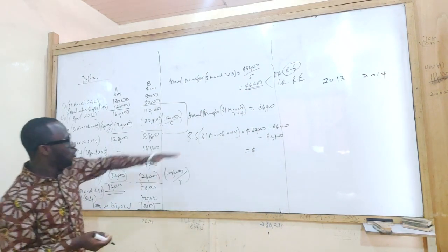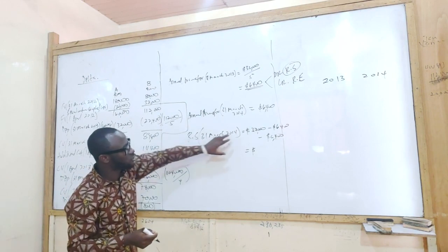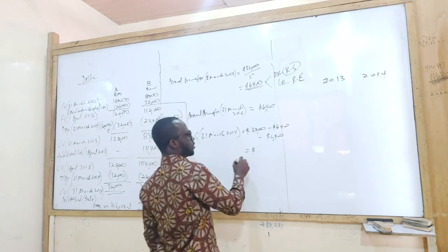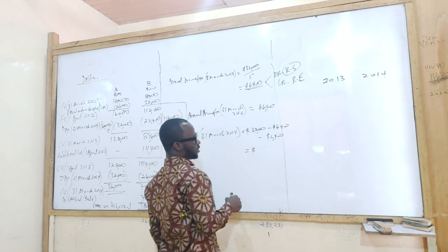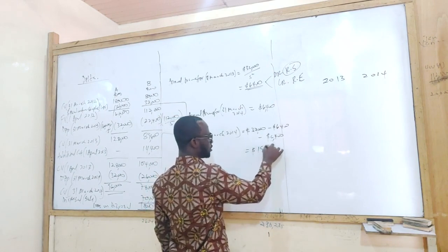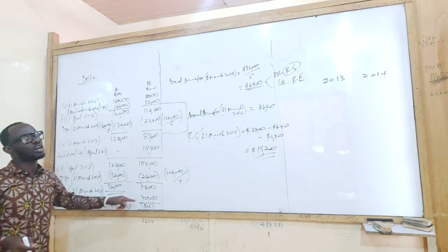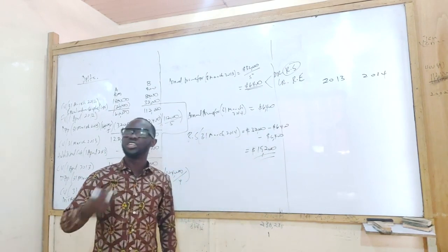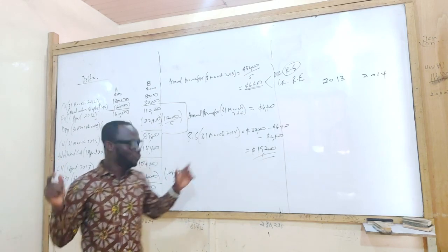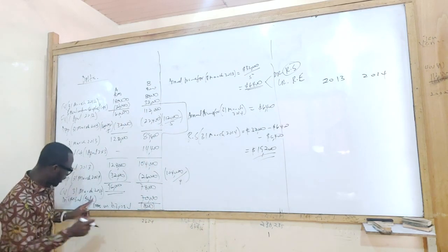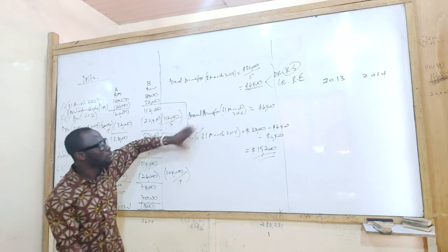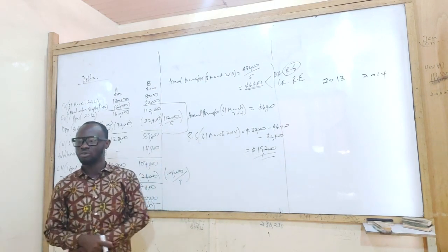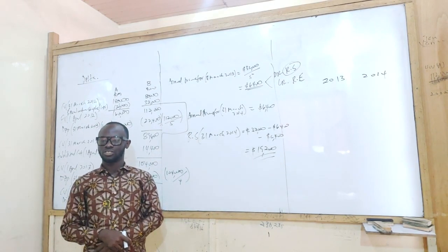How much is left in the revaluation surplus account? 19,200. Now remember — you've disposed of all the assets, so this revaluation gain will be carried in the business as an undistributable reserve. From 2014 going into 2015, there will be no more transfer; they will reclassify this amount as undistributable reserves.